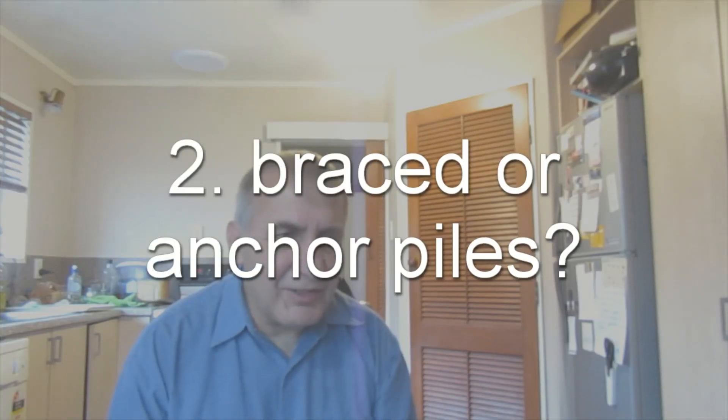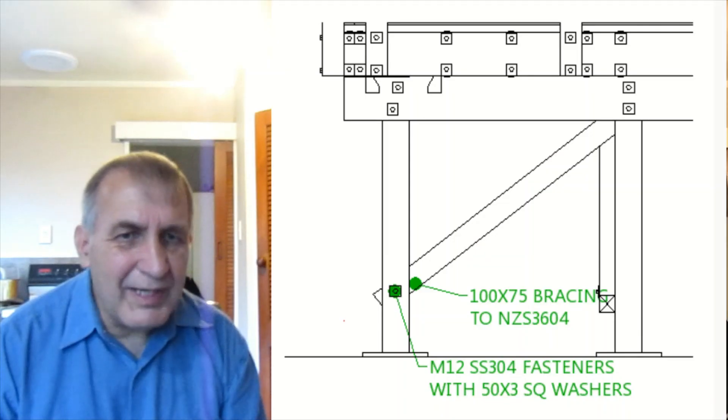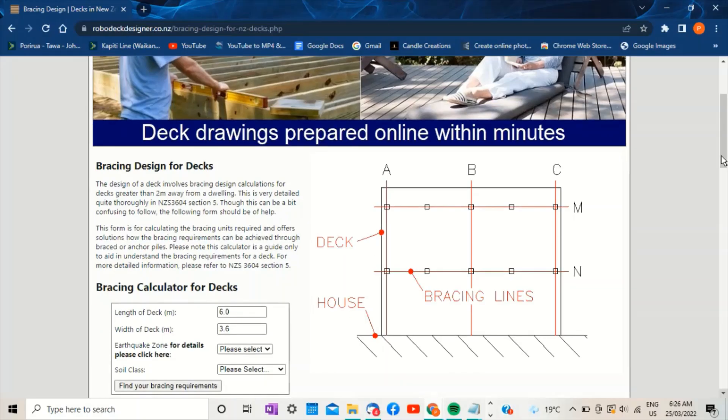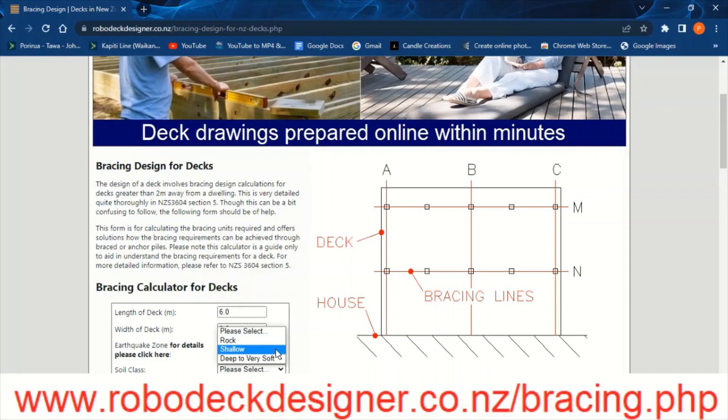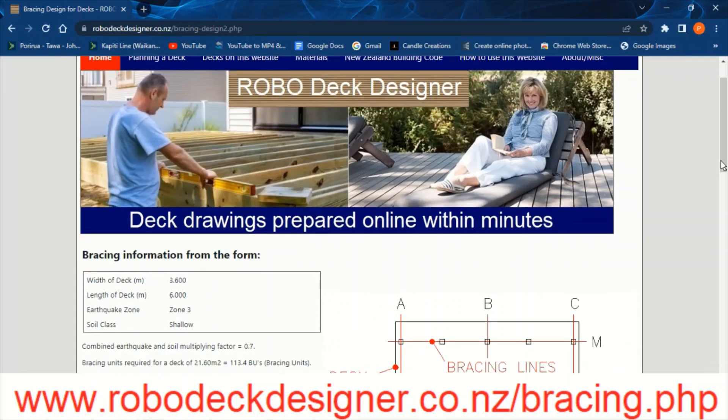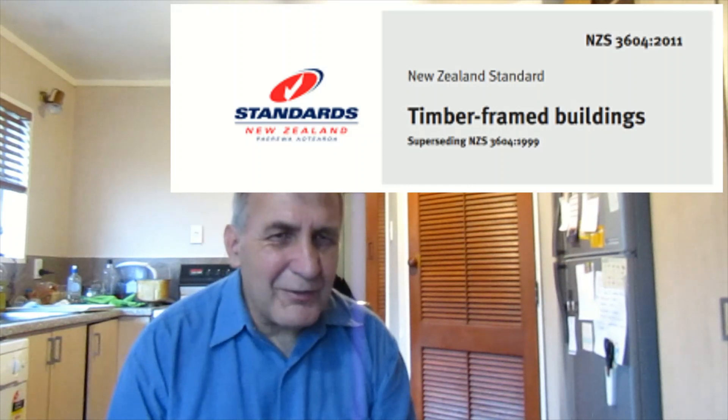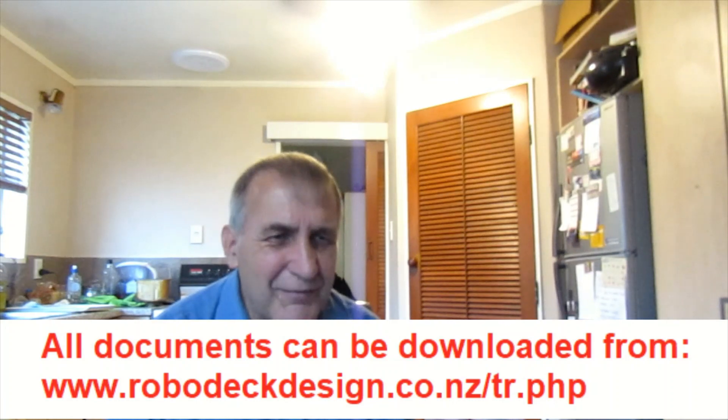For bracing you can use either brace poles or anchor poles. To work out the location of brace poles the easiest way is to use the online Robodeck designer bracing calculator. I've put a link here in the video and also one in the description below. This video refers to NZS 3604 and I put a link on the Robodeck designer website where you can download a copy of this for free.